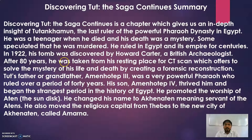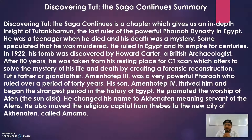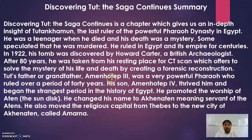After 80 years from 1922, Tutankhamun was taken from his resting place for a CT scan, which offers to solve the mystery of his life and death by creating a forensic reconstruction. In 1922, technology was not advanced enough to perform a CT scan on a mummy, but after 80 years we achieved the technology. The mummy was taken out of the tomb and placed in a CT scan machine. Through the scan, a forensic reconstruction — an image of how the prince might look — was created. The image of Tutankhamun I shared earlier is a result of this forensic reconstruction.